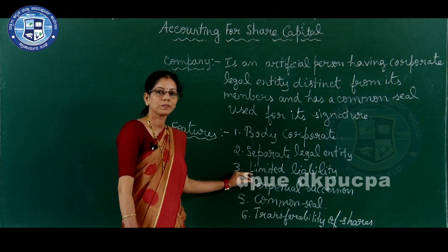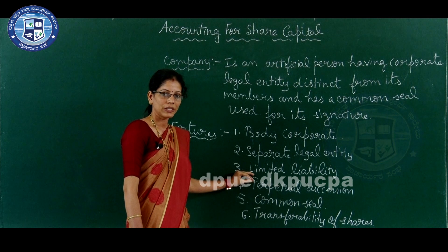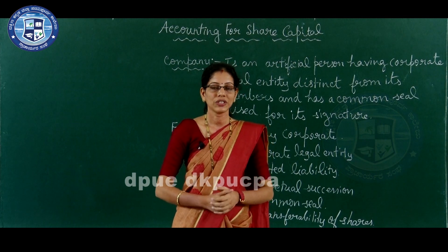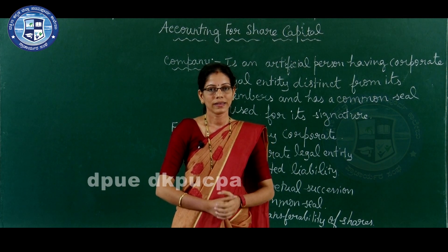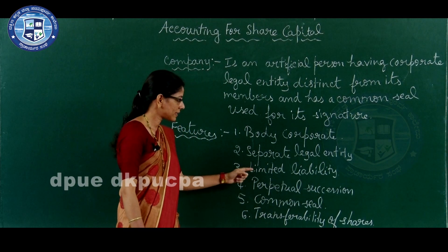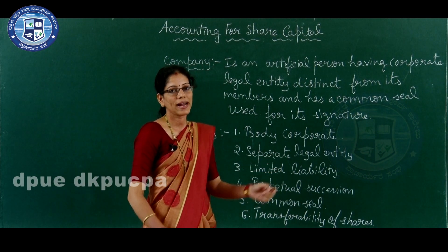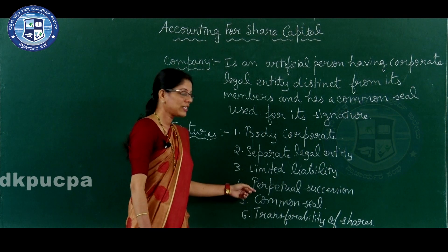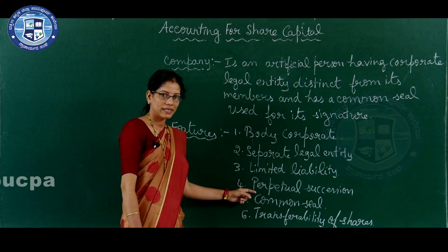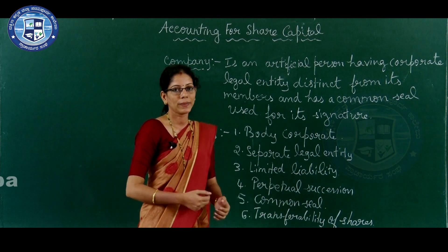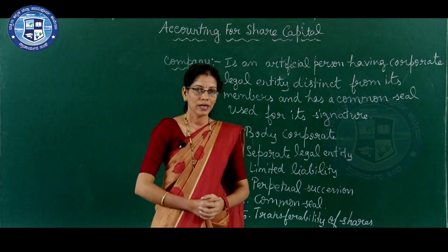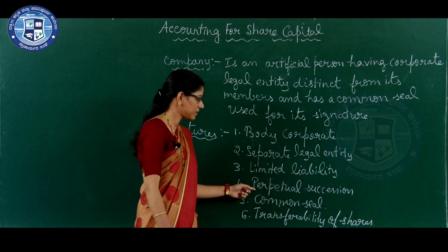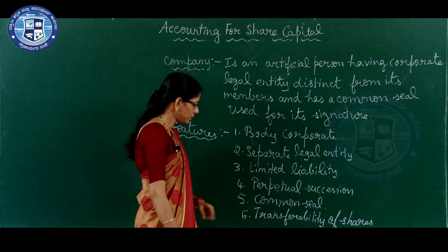Limited liability - the liability of the members of the company is limited to the extent of shares held by them. That is why the members have limited liability. Perpetual succession means continuous existence - any member may come and any member may go, the company runs forever. In spite of the difference in membership, the company runs forever. That is why it is known as perpetual succession.